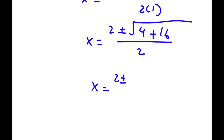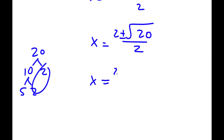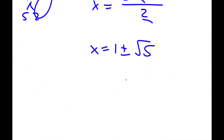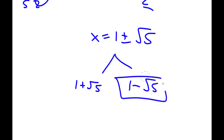So I have x equals 2 plus or minus the square root of 4 plus 16, which is 20, over 2. Now the square root of 20: 20 equals 4 times 5, so the square root of 20 is 2 root 5. So now I have 2 plus or minus 2 root 5, all over 2. Dividing everything by 2 gives 1 plus or minus root 5. To be specific, I have 1 plus the square root of 5, and 1 minus the square root of 5. These two are my answers.